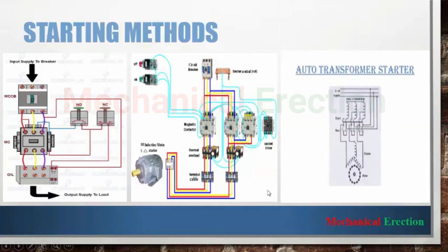The final starting method is the auto transformer starting method. In this method, an auto transformer is used to reduce the starting current. During running, the auto transformer is cut and full current is applied straight to the winding. From the diagram we can see that the auto transformer is connected while the motor is being started, and while the motor is running the auto transformer is cut from the circuit, and the full current and voltage is applied to the motor terminals from the supply.